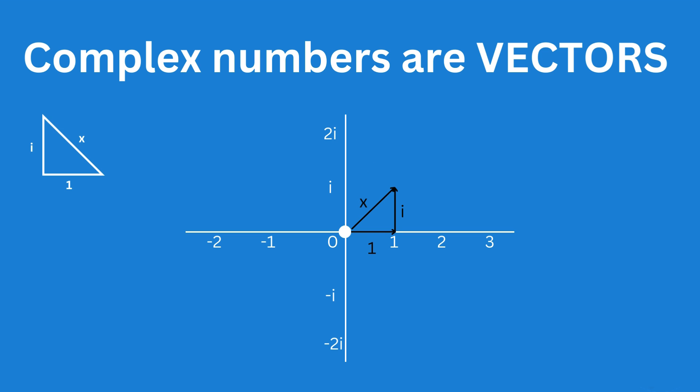If we return to the original equation, we can see that we need to take the size or magnitude of the vectors i and 1 in order to solve for the size of x. The size of 1 and the size of i are both 1, since they are both 1 unit long, and they're both 1 unit from the origin.